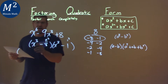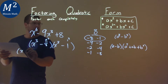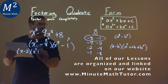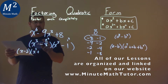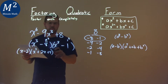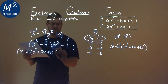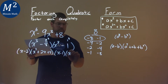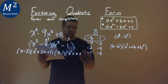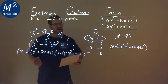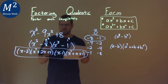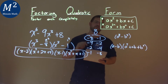If our a value is x and our b value is 2, since 2 cubed equals 8, and 1 cubed equals 1, we use the difference of cubes formula. For the first part: x minus 2 times x squared plus 2x plus 4. For the second part with a equals x and b equals 1: x minus 1 times x squared plus x plus 1. Our final answer is x minus 2 times x squared plus 2x plus 4, times x minus 1 times x squared plus x plus 1.